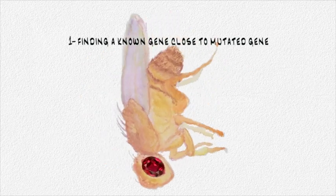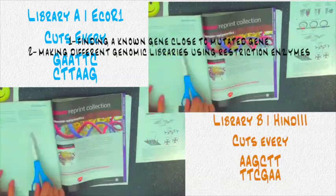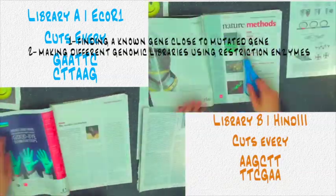In summary, positional cloning with chromosomal walking is carried out by the following steps. First, finding a known gene that is closest to our mutated gene. Second, making different genomic libraries using restriction enzymes. Third, putting the libraries into vectors, viruses, and bacteria.